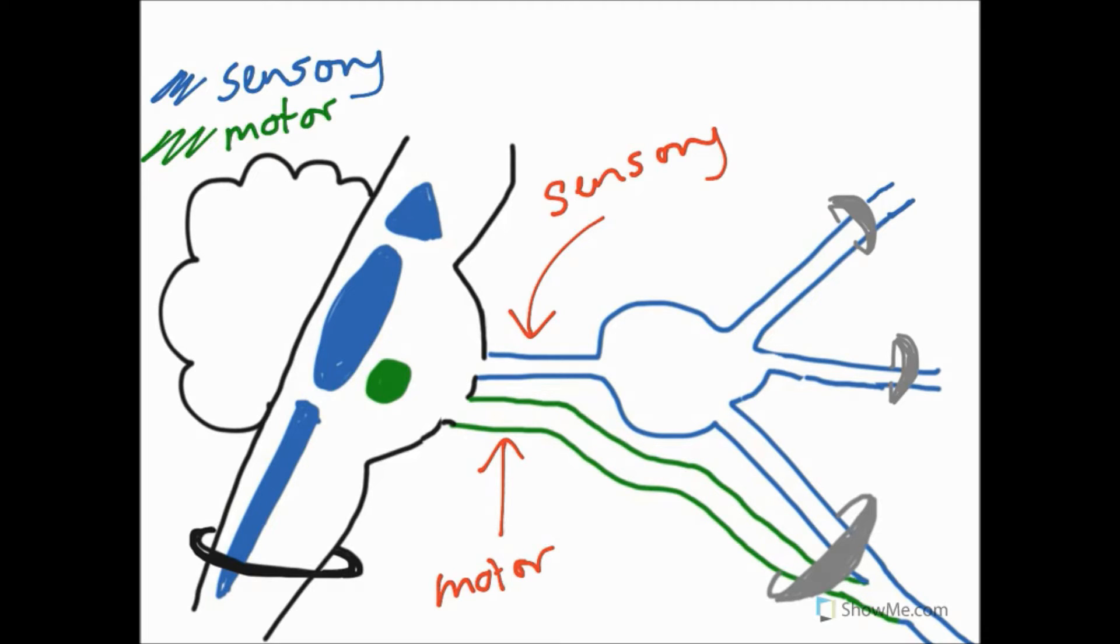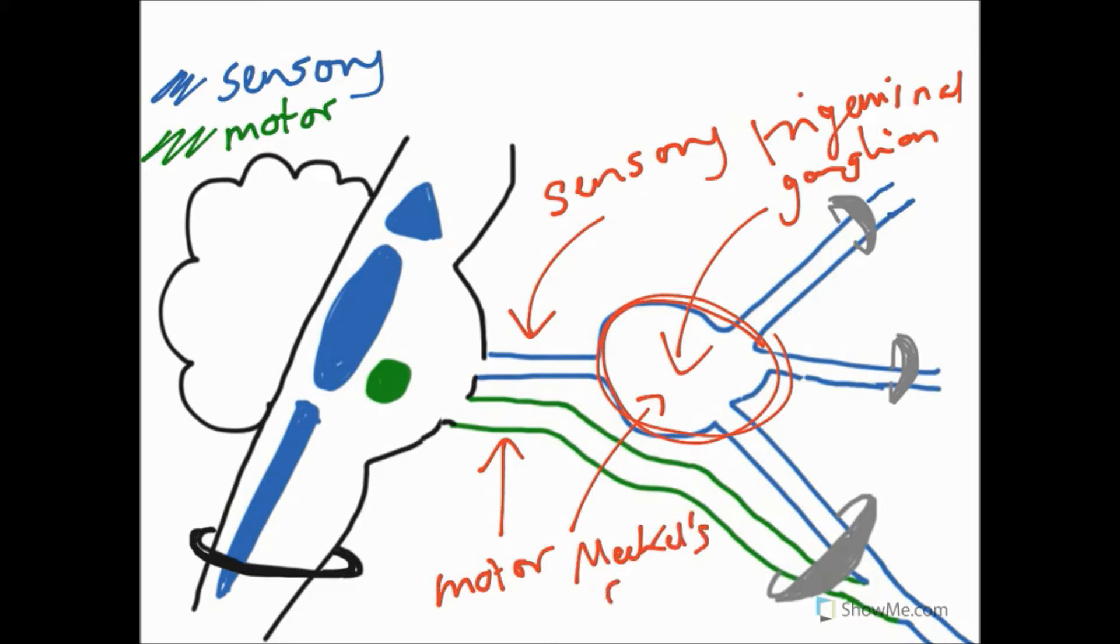And then you can see that just going through the sensory root or continuing on from the sensory root, we've got this thing here. And this is our trigeminal ganglion. This is quite easy to see in dissections because it's rather large. And this trigeminal ganglion is held in or is bound by two layers of dura. And this is called Meckel's cave. Meckel's cave. And this is in the middle cranial fossa.